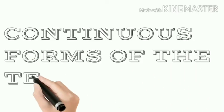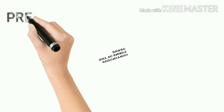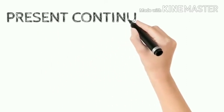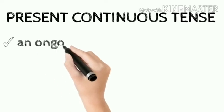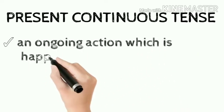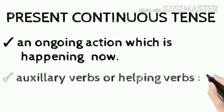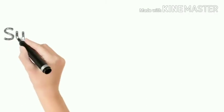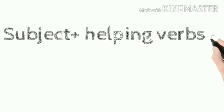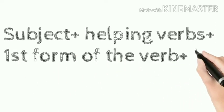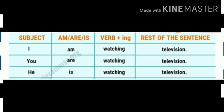We will talk about the continuous forms of the tense. The first one is the present continuous tense. It expresses an ongoing action which is happening now. The auxiliary verbs or helping verbs used are is, am, and are. The rule says: subject plus helping verb plus first form of the verb plus -ing plus the object. Examples: I am watching television. You are watching television. He is watching television.